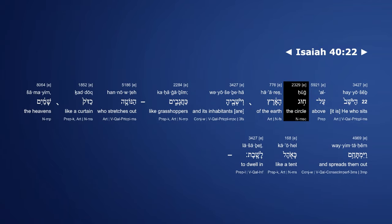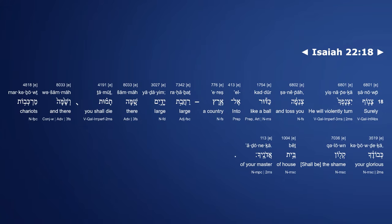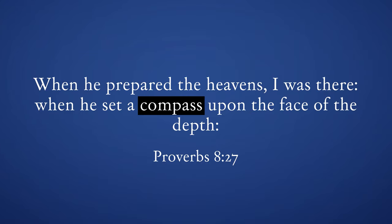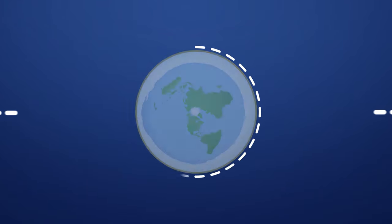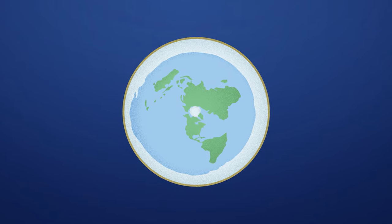Isaiah used another Hebrew word, der, when referring to a ball. The Hebrew word kug is elsewhere translated compass. During our world's creation, God set a compass, or engraved a circle, upon the face of the depth.